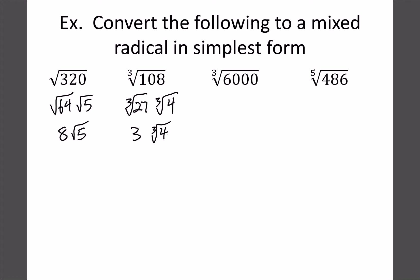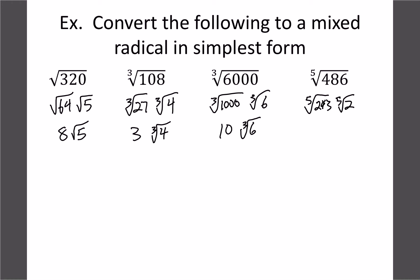For ∛6000, 1000 is on the cube root list, so 1000×6 = 6000. The ∛1000 = 10, giving 10∛6. For the fifth root example, ⁵√486: 243 is on the fifth root list and 243×2=486. The ⁵√243 = 3, so the answer is 3·⁵√2. With regular numbers, just remember to always pick the biggest perfect root from the list so you only need one step.